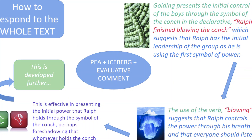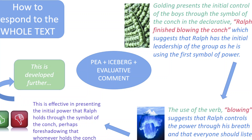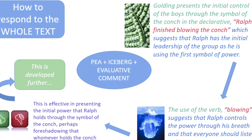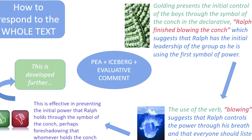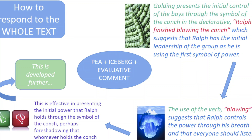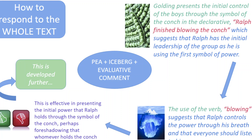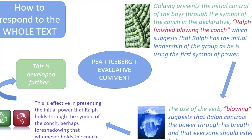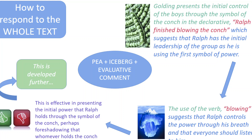Finally, I want to talk about how students actually structure their responses to hit the criteria. We're looking at AO1, AO2 and AO3 — reference the text, analysis of language, structure and form, and contextual understanding. For each section of a paragraph response of about three to four sentences, I'm going to focus on a PEA, iceberg, and evaluative comment structure. So we look at the PEA: 'Golding presents the initial control of the boys through the symbol of the conch' — in the declarative. I've used linguistic terminology in categorising the type of sentence as a declarative, so that's AO2. And then I've got reference to the text in red: 'Ralph finished blowing the conch,' which is AO1. I'm starting to clearly hit the criteria in the mark scheme.